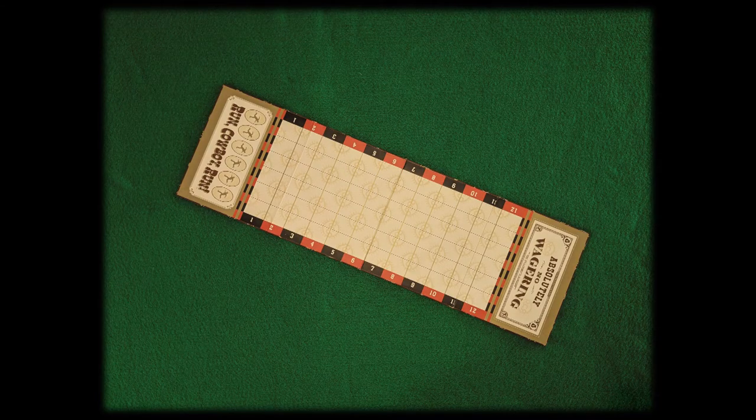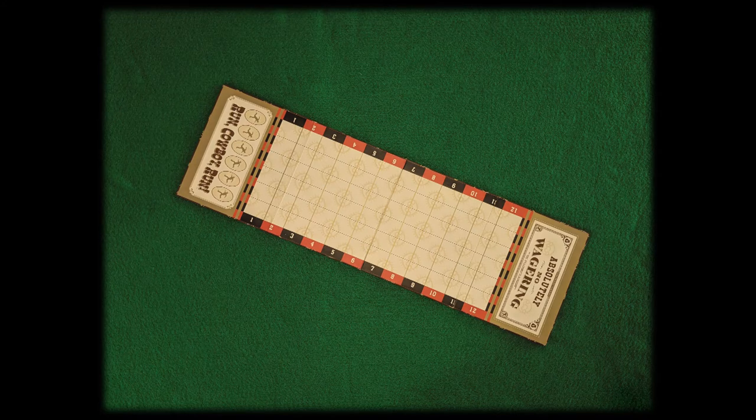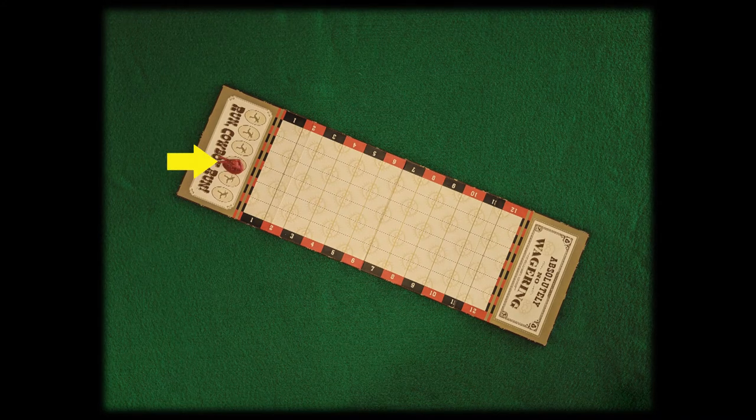First, place the track in the center of the table. Now, each player picks a cowboy, and places at the starting line.